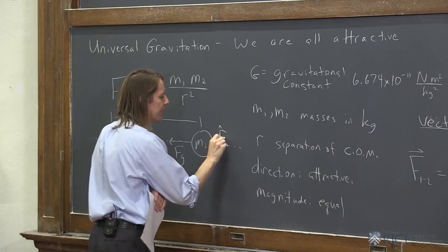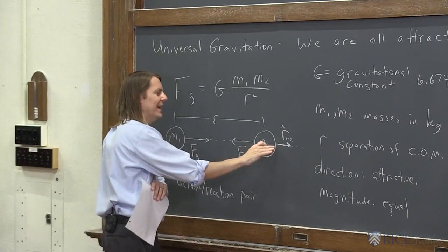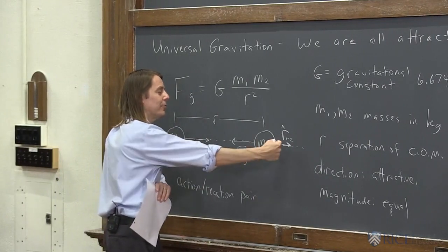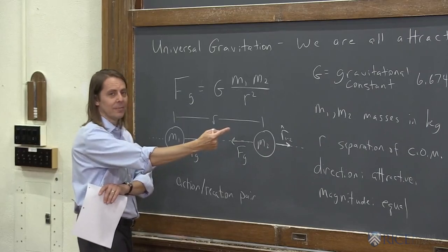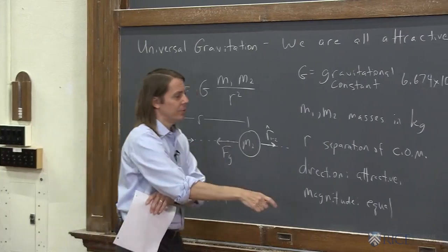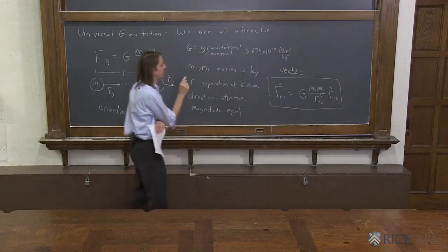All right. So here I could draw it here. There is the unit vector r̂_12. So since it points in the direction 1 to 2, and since the gravitational force is attractive, the force will be the opposite direction, that's why there's a negative sign there. Okay. So this is the vector way to write it.